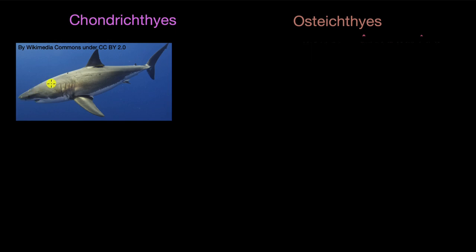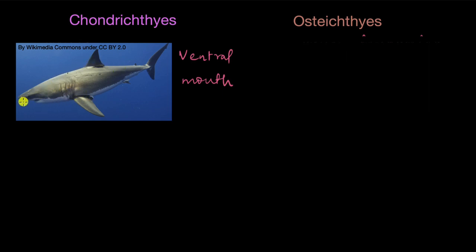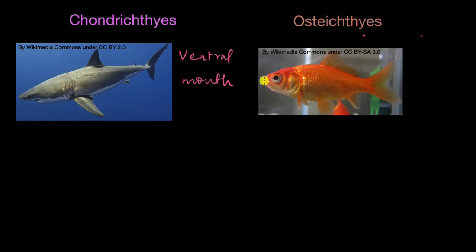The fish in Chondrichthyes have a mouth at the bottom — on the underside of the body — which is called the ventral side. So Chondrichthyes have a ventral mouth. In Osteichthyes, the mouth is neither dorsal nor ventral; it is at the very tip of their head, so they are said to have a terminal mouth.